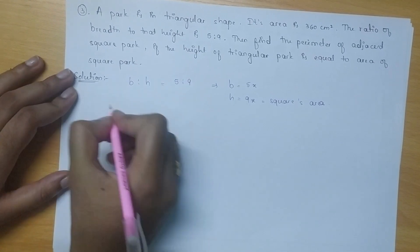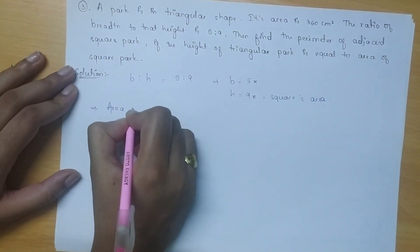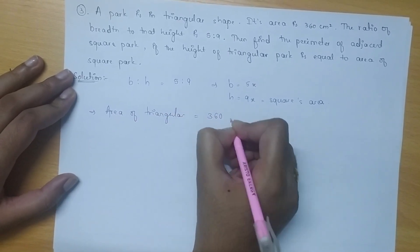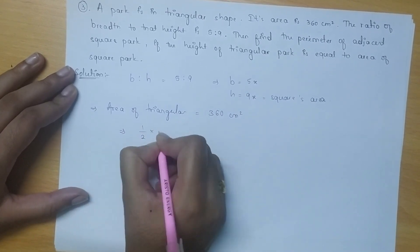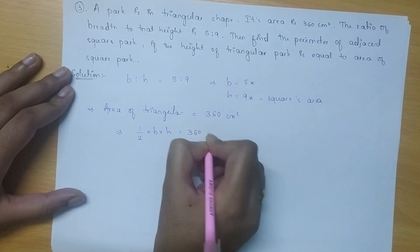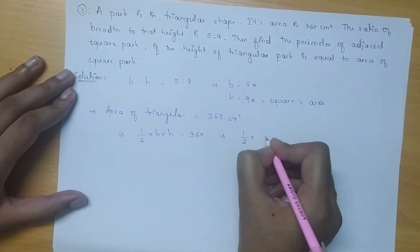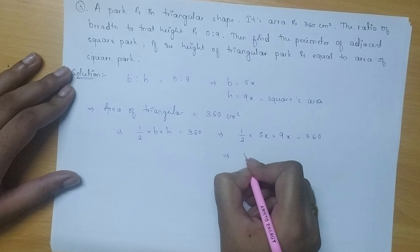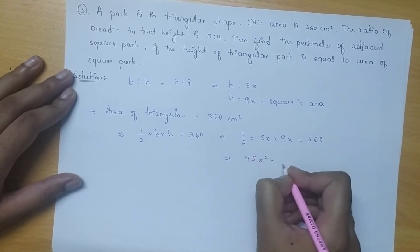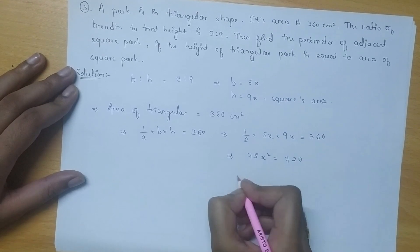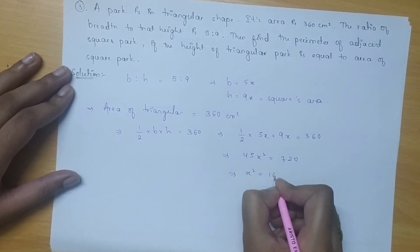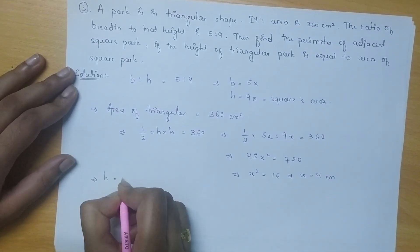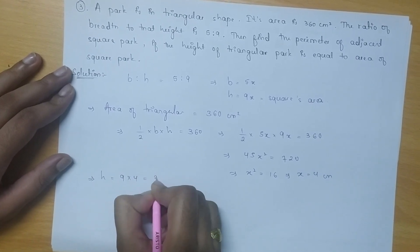The area of the triangular park is given as 360 cm square. Applying the formula of half base into height we get 360 cm. So, half multiplied by 5x multiplied by 9x equals 360. Thus, 45x square equals 720. Then x square equals 16, which gives x equal to 4 cm.